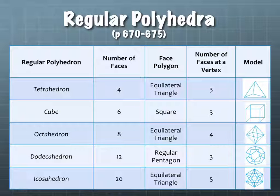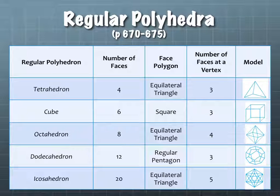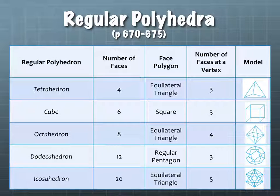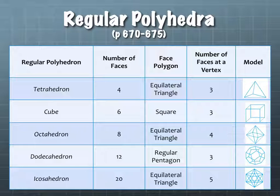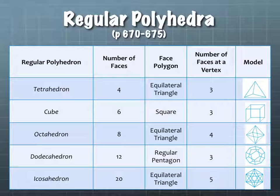We have a cube. The cube you're very familiar with, because our dice are actually cubes, roughly speaking — they kind of round off the edges sometimes. The faces are squares, and there are six of them: four around, one on top, one on bottom. At every vertex, there are three faces that meet there, at the corners of your cubes.